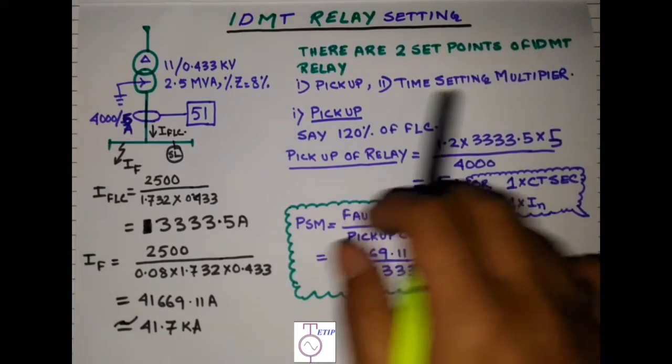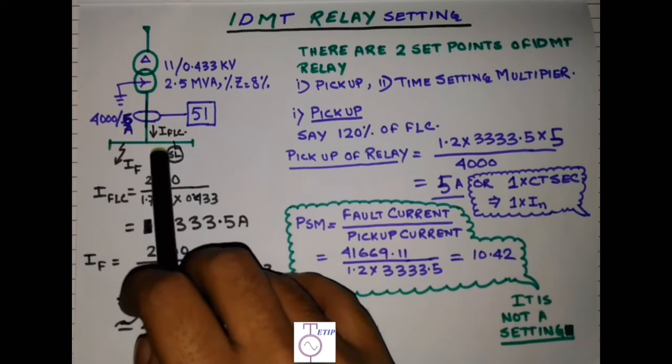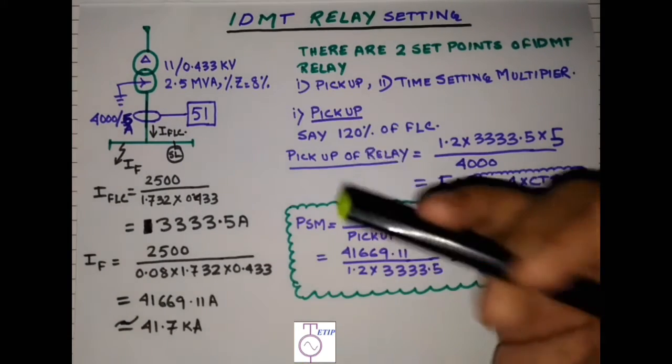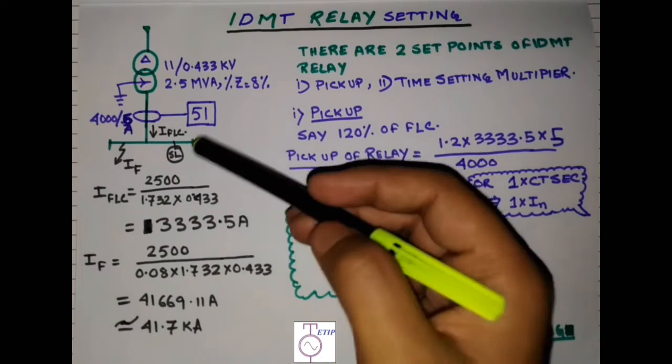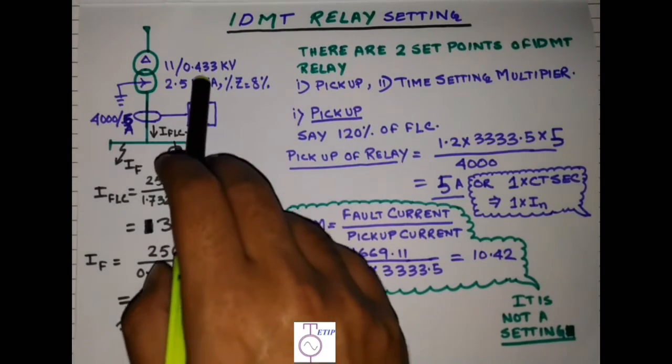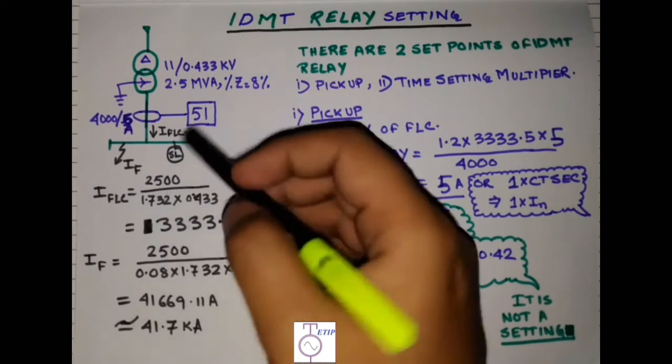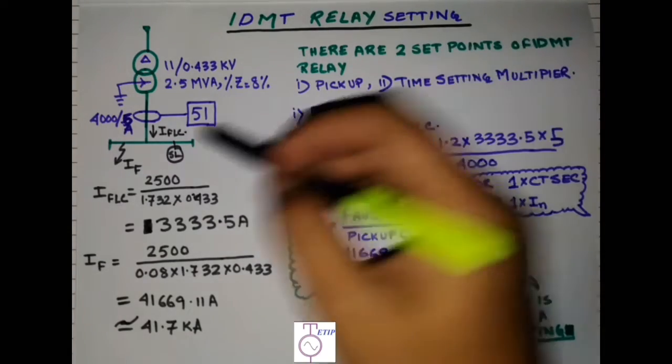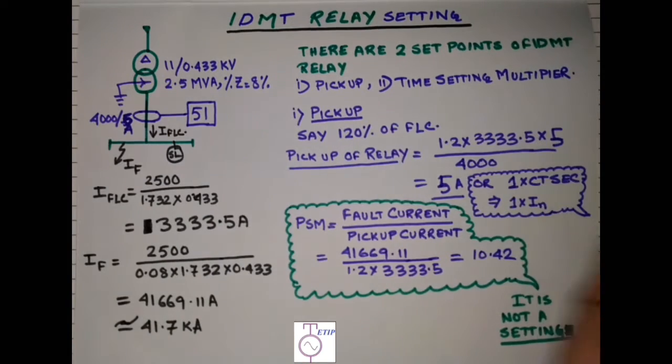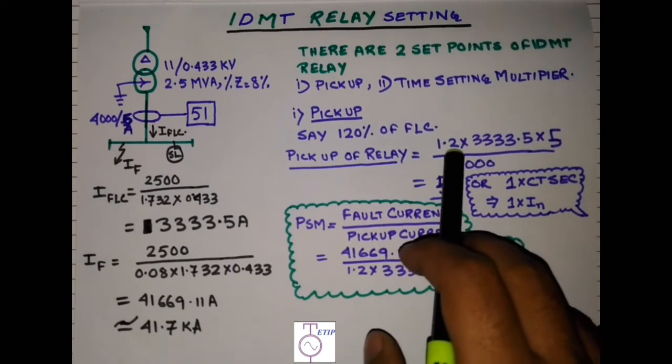Now we will check the set points. As I mentioned earlier, there are two set points: one is pickup and another is time setting multiplier. First we will go for the pickup settings. Generally the pickups are set as 20% higher than the full load current. The 20% margin is taken because in case there is a low voltage, suppose the voltage has got down from the rated voltage about 10%, then the current will be higher 10% to feed the same load. So we keep a margin of 20% so that for any normal condition it doesn't pick up.